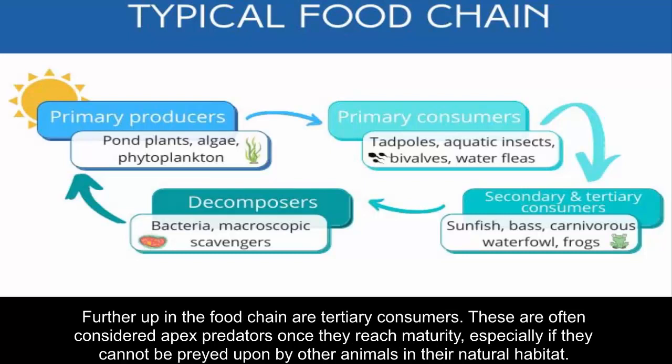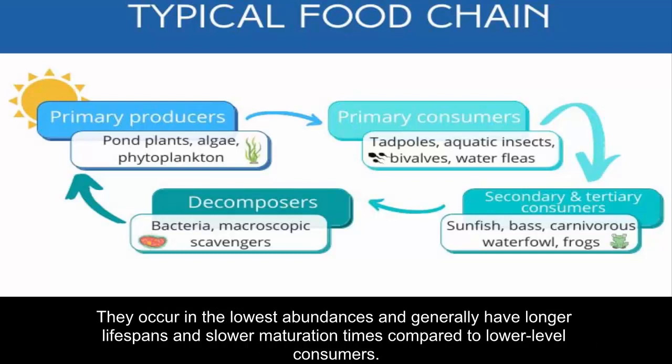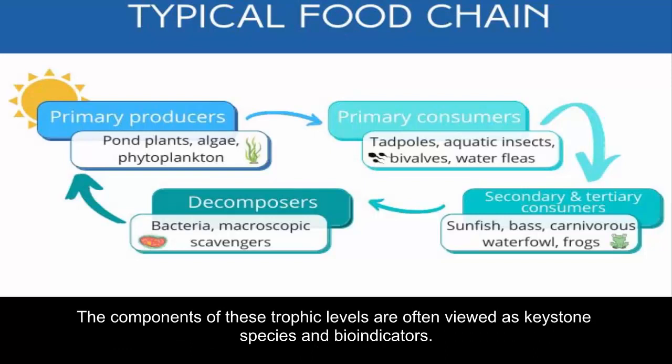Further up the food chain are tertiary consumers. These are often considered apex predators once they reach maturity, especially if they cannot be preyed upon by other animals in their natural habitat. Game fish — for example walleye, largemouth bass, and lake trout — large waterfowl such as herons and storks, riparian mammals, and large reptiles make up this formidable trophic level. They occur in the lowest abundances and generally have longer lifespans and slower maturation times compared to lower-level consumers. The components of these trophic levels are often viewed as keystone species and bioindicators.